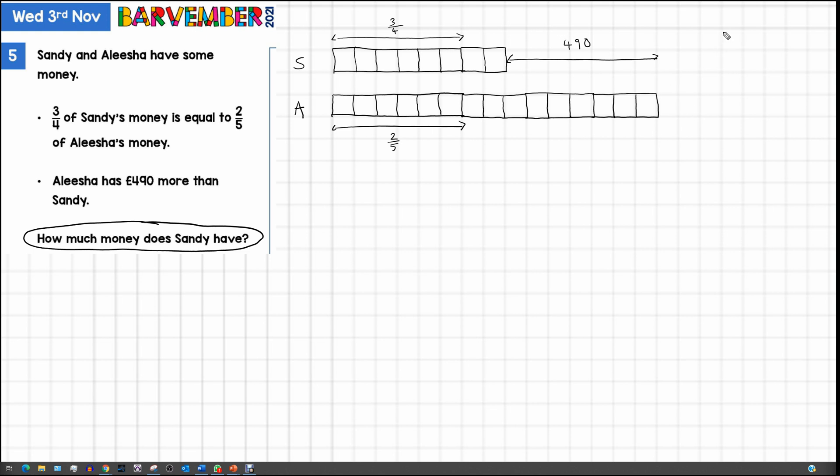So if we divide 490, I should do it down here. 490 divided by 7 equals 70. So what we've figured out is that each of these blocks, they're all worth £70.